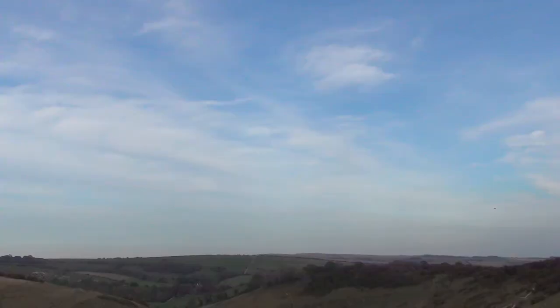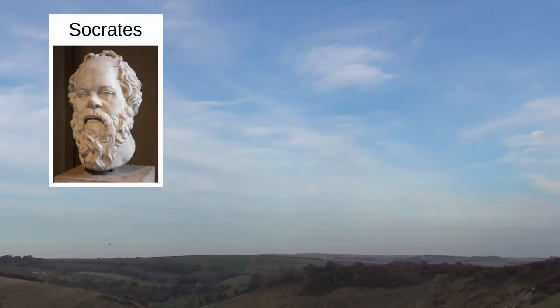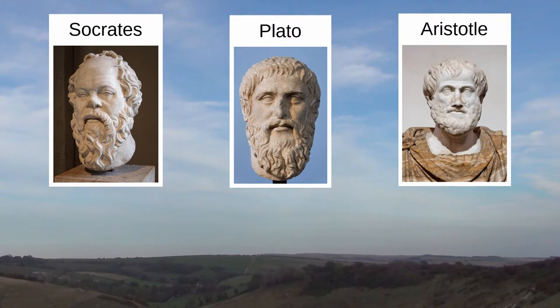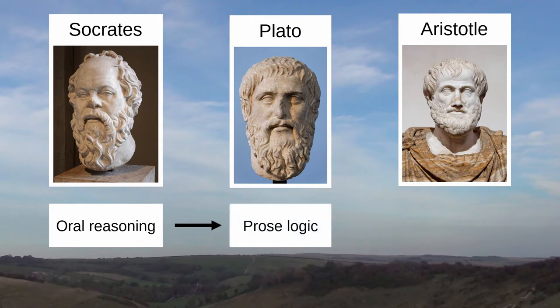From a Western philosophical perspective, the history of logical reasoning started with the ancient Greek philosophers over 2,000 years ago. And in some simplistic sense, you could say that the three most famous Greek philosophers — Socrates, who taught Plato, who taught Aristotle — foretold a long arc of this history from oral reasoning to prose-written logic to the beginnings of symbolic logic.